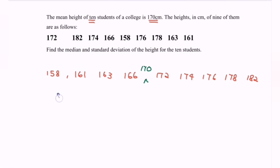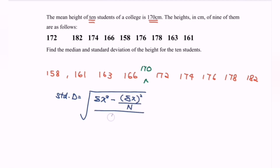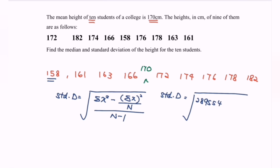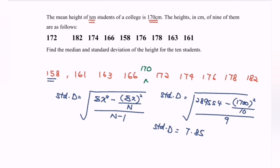Next is to find the standard deviation. The formula for standard deviation for ungrouped data is: √[(Σx² − (Σx)²/n) / (n − 1)]. So: √[(158² + 161² + 163² + ... + 182² − 1700² / 10) / 9]. We have Σx² = 289554, giving a standard deviation of 7.85 (3 significant figures).